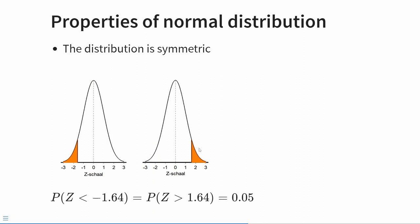Let's look at the properties of the standard normal distribution more closely. The mean is 0 and the standard deviation is 1, so the graph shows 1 to 3 standard deviations above and below the mean. One property is that it's symmetrical — the left side is identical to the right side, meaning areas under the curve on the left equal areas on the right. For example, the probability of observing a z-score smaller than minus 1.64 is exactly the same as the probability of observing a z-score greater than plus 1.64 — both highlighted in orange, each with a surface area of 0.05, or 5%.